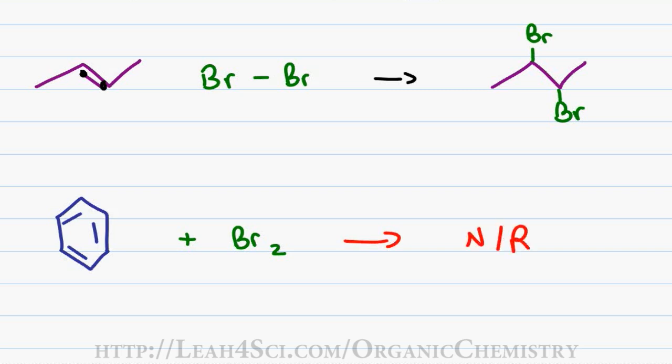Why? Because the pi bonds in benzene are a lot more stable than an alkene. In reactions, we follow the rules of happy, stable, unreactive versus unhappy, unstable, very reactive. The only reason a molecule will react is if the next step or the outcome will make it more stable than the starting molecule.